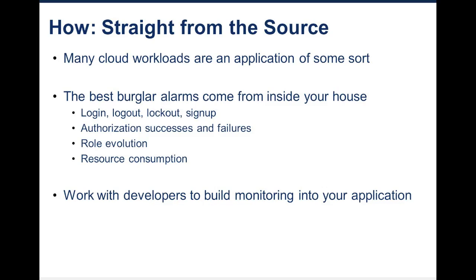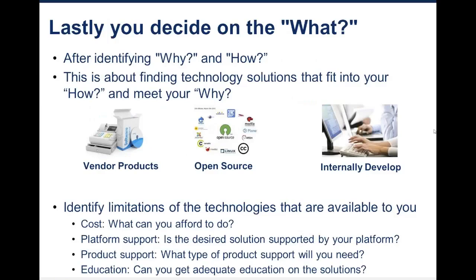Jumping back on track: we've talked about the why and the how. Why are we doing this — the business purpose. How are we going to do this — the architecture, the characteristics, the requirements. And lastly, once you've done that, you have to actually implement it. Pontification is great, but at some point you've got to get down and actually do something. This is the what.